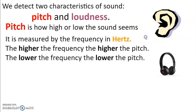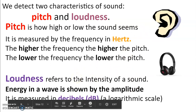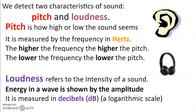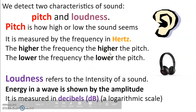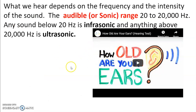Pitch is how high something sounds and is related to frequency. Loudness is related to amplitude — how much energy the wave has. If you barely tap a drum it makes a quiet noise; if you hit it hard it makes a louder noise, but the pitch stays the same. Humans can only hear frequencies between 20 and 20,000 Hz. Dog whistles are above 20,000 Hz, which is why you can't hear them but dogs can.